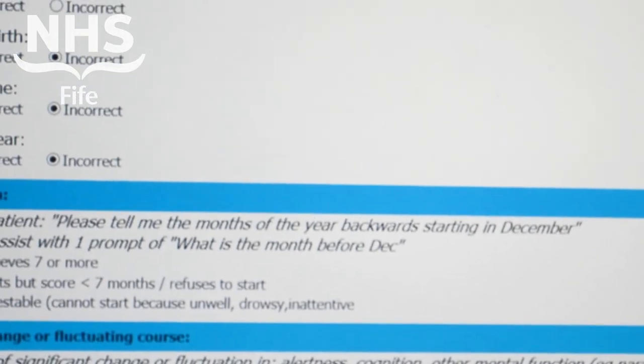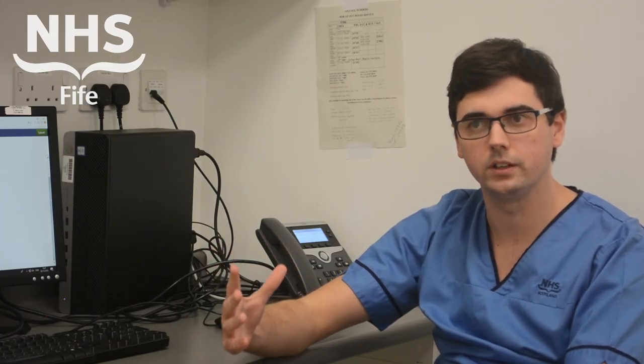The next question is based around assessing attention, because inattention is a key thing within delirium that we need to look for. The question designed for this is asking the patient to recite the months of the year backwards, from December going back. You can score zero, one, or two for this. If you can get seven months of the year or more in a row backwards successfully, you'll score zero. If you get one or two wrong you're going to score one, or if the patient refuses to start they'll score one. If the patient is untestable — usually due to impaired cognitive or conscious level — you're going to score two.